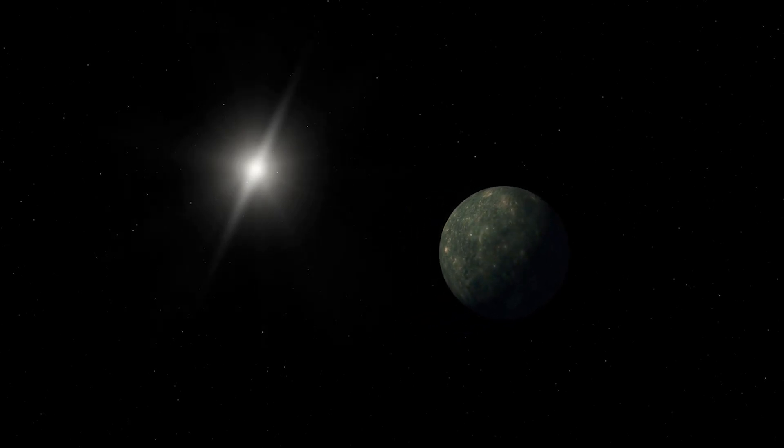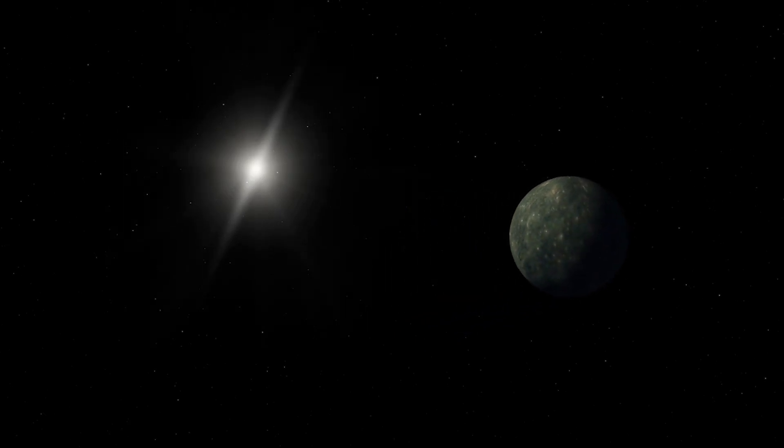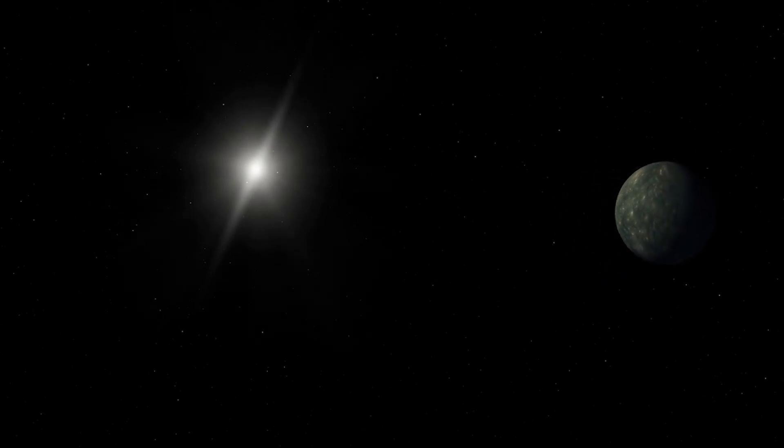Before that, it passes the sun near the end of October at about 1.4 astronomical units, just inside the orbit of Mars.